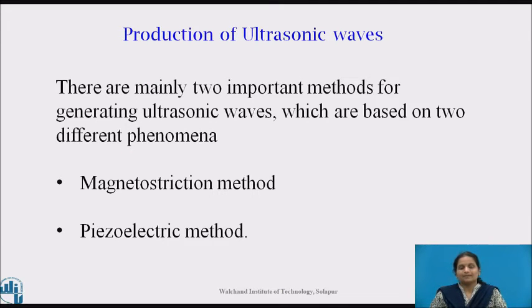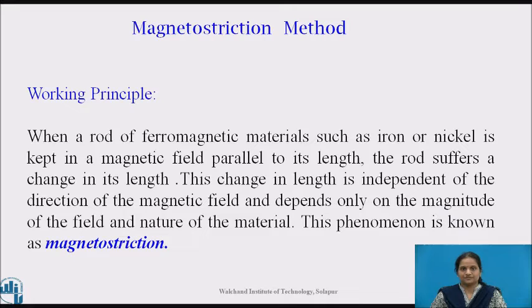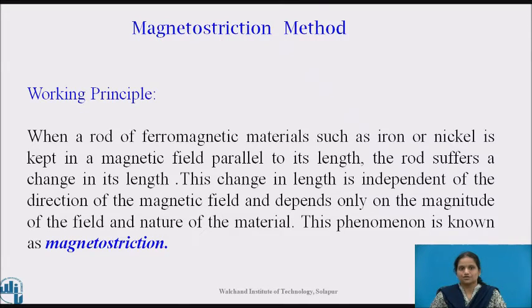There are mainly two important methods for generating ultrasonic waves, which are based on two different phenomena: the magnetostriction method and the piezoelectric method. The magnetostriction method is used to produce waves in the frequency range of 20 kHz to 100 kHz.